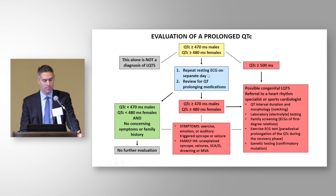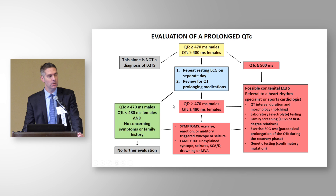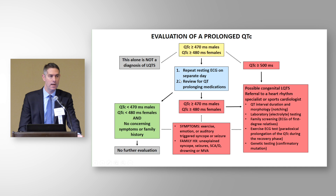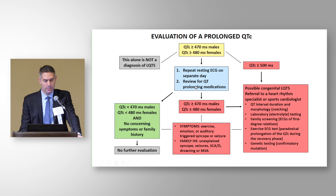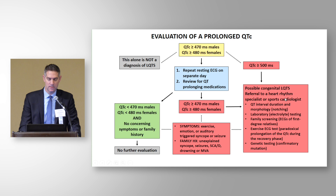At minimum, repeat testing of their ECG on a different day is recommended, and review for any QT-prolonging medications — which is really the number one cause of a prolonged QTc. There is also a cutoff for alarm, which is a QTc greater than 500 milliseconds, triggering additional evaluation. If QT-prolonging medications have been reviewed, the person isn't ill, we've repeated the ECG, and it still surpasses our cutoffs, we need more investigation to confirm or exclude congenital Long QT syndrome, in collaboration with a heart rhythm specialist or cardiologist.